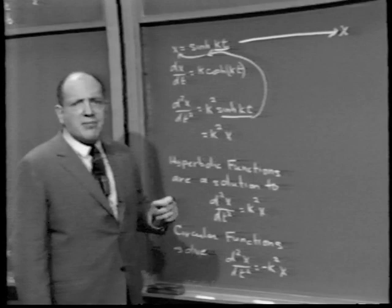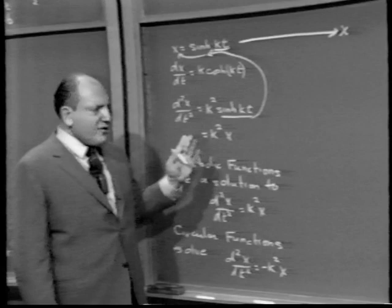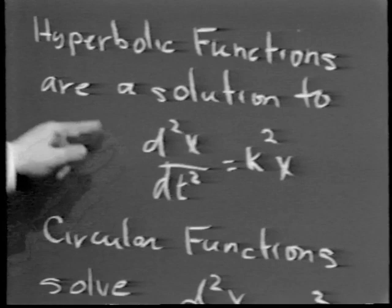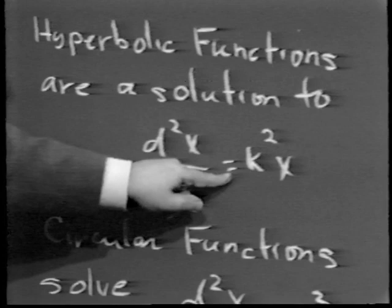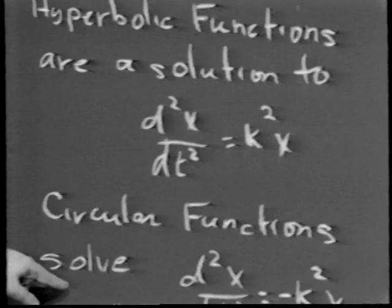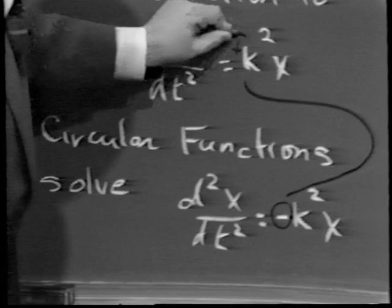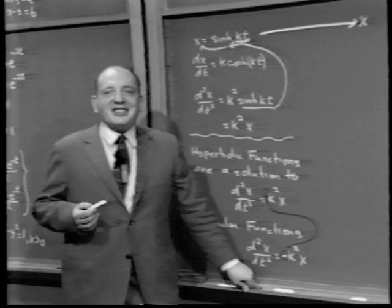From a physical point of view, the hyperbolic functions solve the equation d²x/dt² equals k² x, while the circular functions solve d²x/dt² equals minus k² x. The difference between the circular and hyperbolic functions is again just a difference in sign — a beautiful summary of everything we've discussed today.